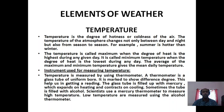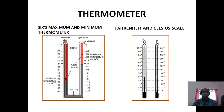The instrument used for measuring temperature is the thermometer. As you can see in the picture, it is Six's maximum and minimum thermometer. It is composed of a U-shaped glass tube filled with mercury and alcohol. The contraction and expansion of mercury bring changes in the level of the metal indices, which help us to interpret changes in the temperature of the air. We use two kinds of scale for measuring temperature: the Fahrenheit scale and the Celsius scale.